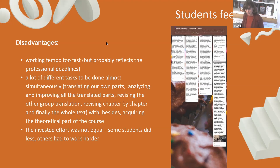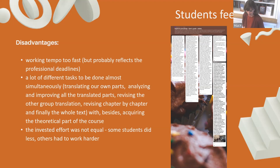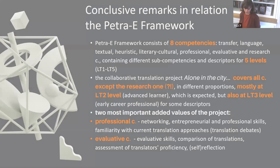As for disadvantages, students noted: the working tempo was too fast — one chapter per week was really hard work, though it probably reflects professional deadlines. They also mentioned a lot of different tasks to be done almost simultaneously: translating their own parts, analyzing and improving all translated parts, revising the other group's translation, revising chapter by chapter and then the whole text, alongside acquiring the theoretical part of the course. Additionally, invested effort was not equal — some students did less while others had to work harder. This is a reality they should be aware of, since even professionally, some people always pull more than others.